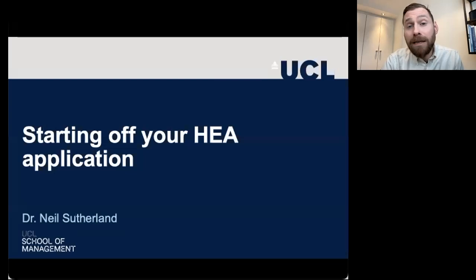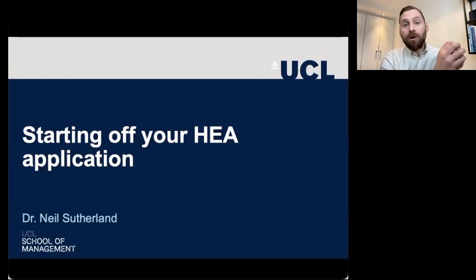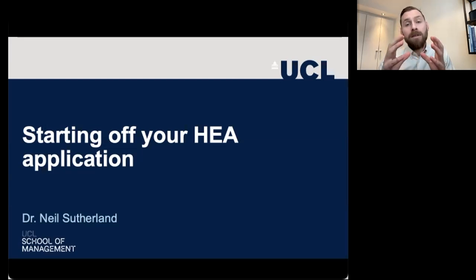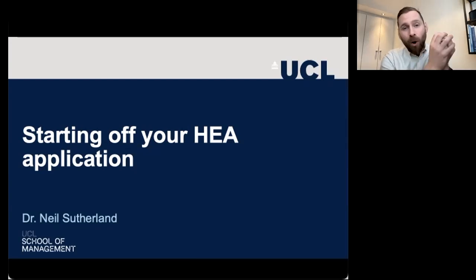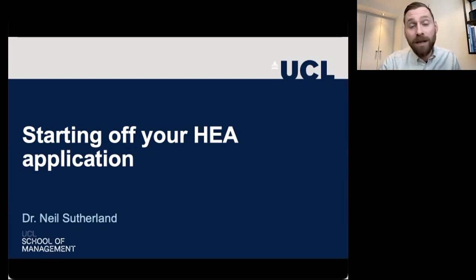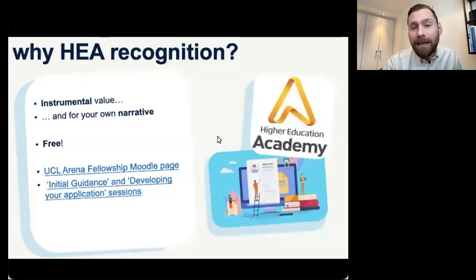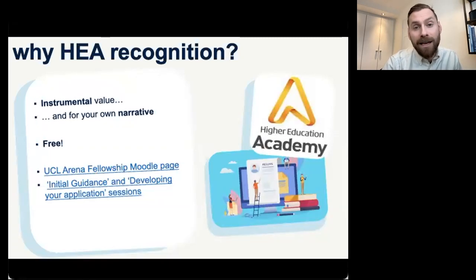There's going to be three core sections to this. The three core sections are going to be about picking the level at which you're going to apply — today we'll be talking about associate fellowship and fellowship. You're then going to think about the dimensions that you're going to be speaking to, which is essentially looking at the marking rubric. And finally, what's actually going to be required in terms of you writing up documentation. But before that, I'll just talk a little bit about why you're interested in this HEA recognition.